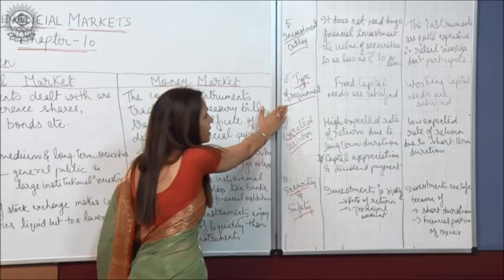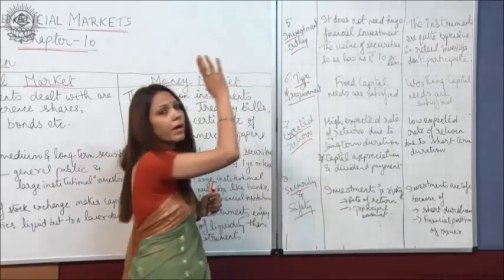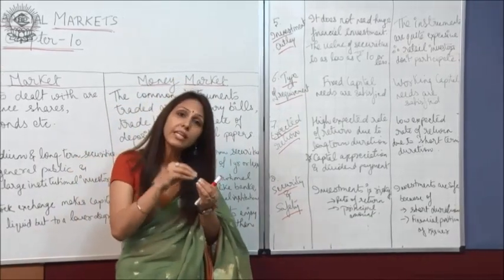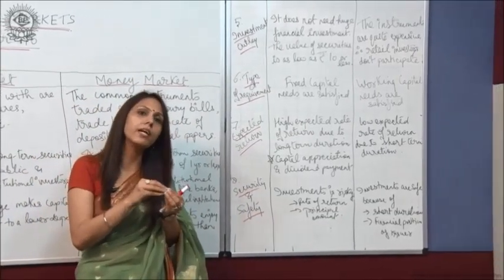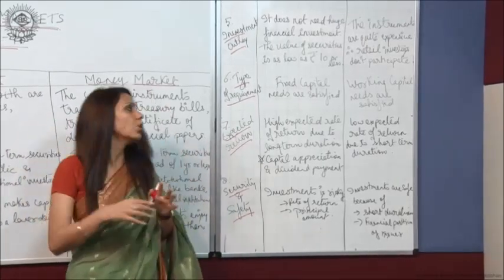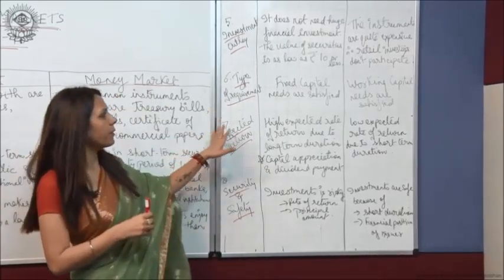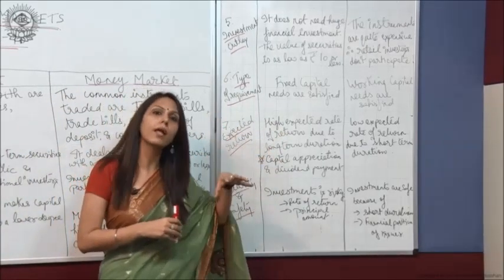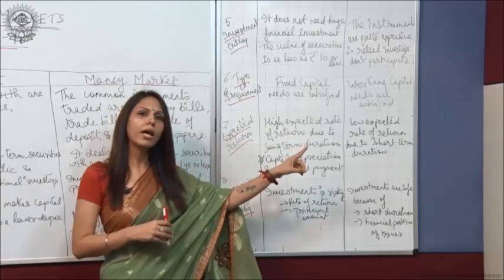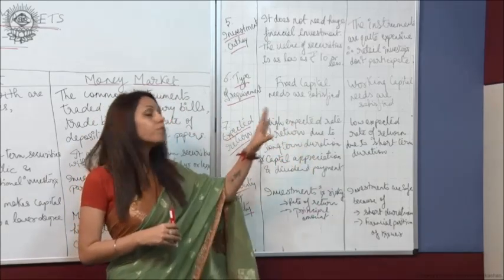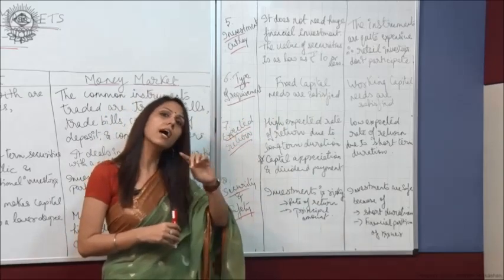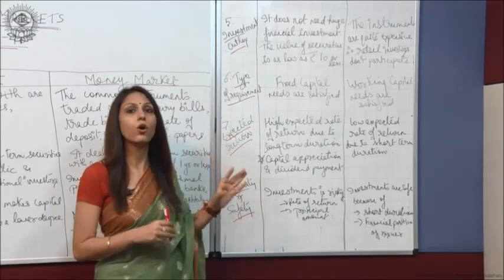The sixth point is the type of requirement — what type of need is satisfied in money market or capital market. In capital market, fixed capital requirements or needs are satisfied. Whereas in money market, working capital requirements and working capital needs are satisfied or met.